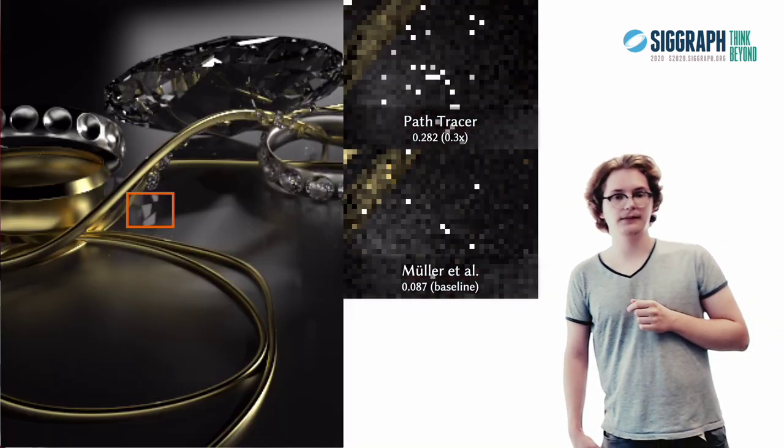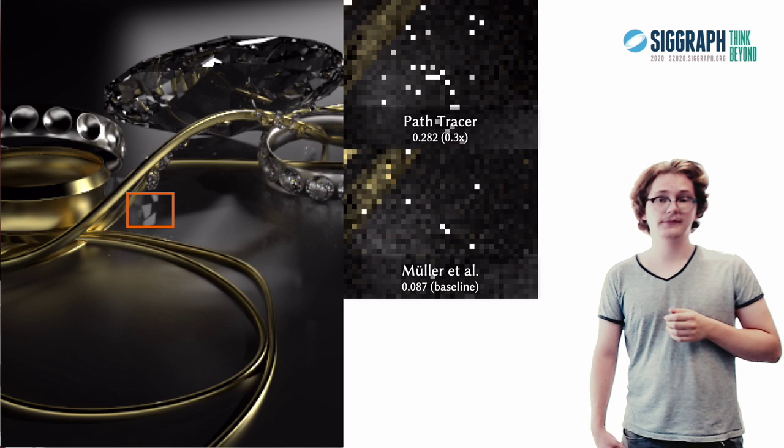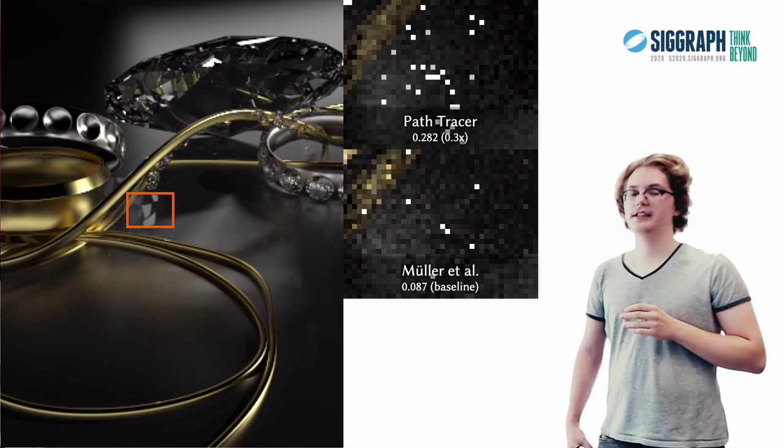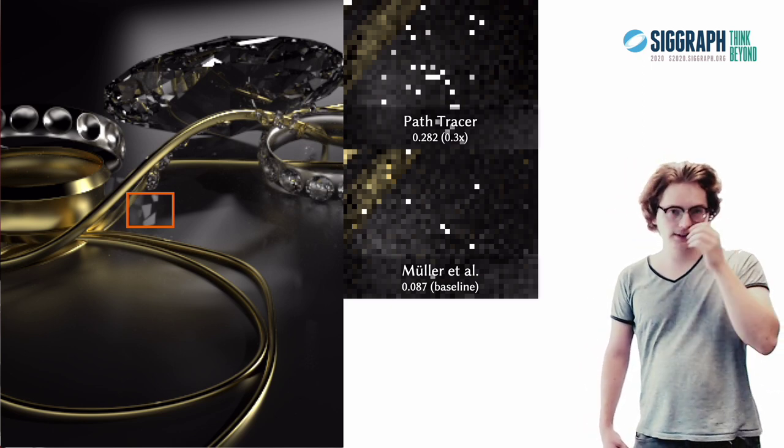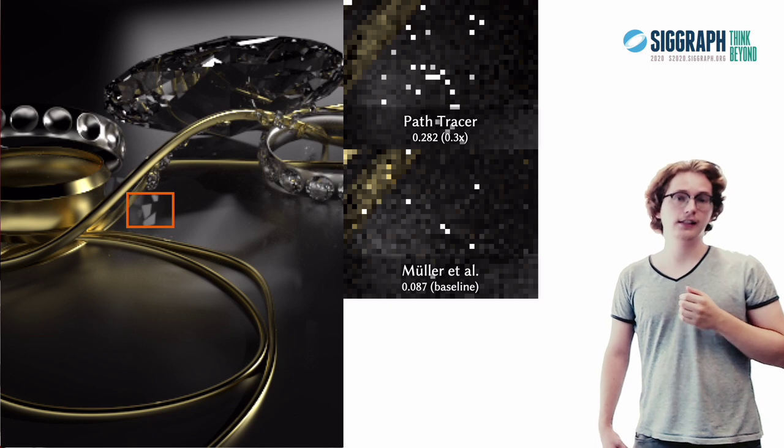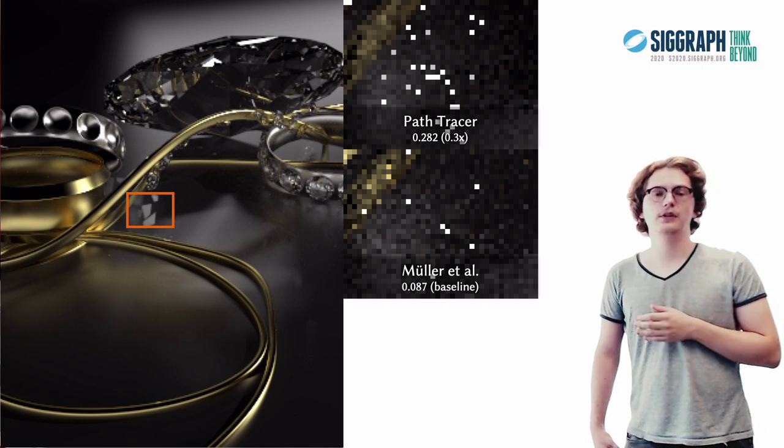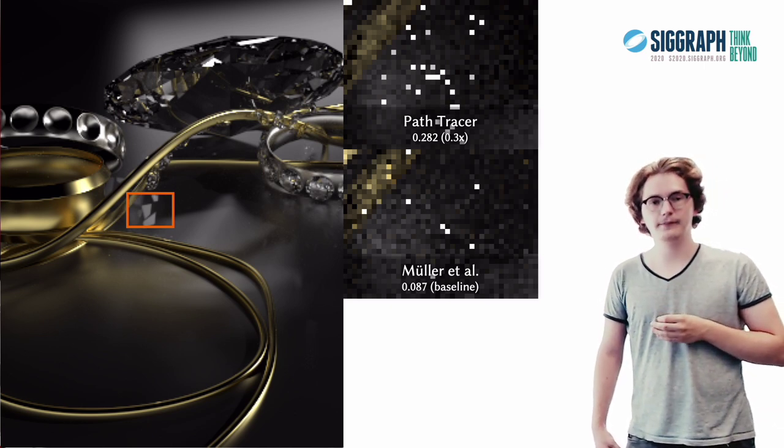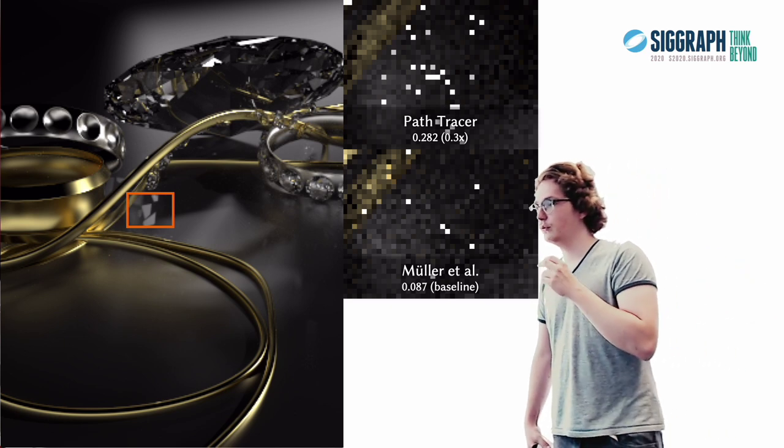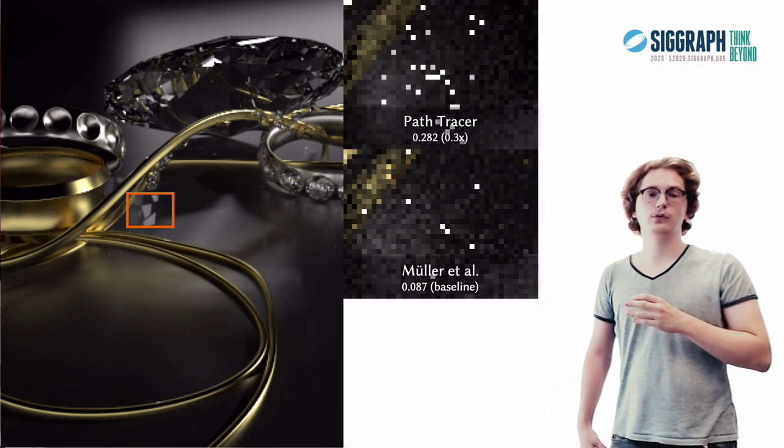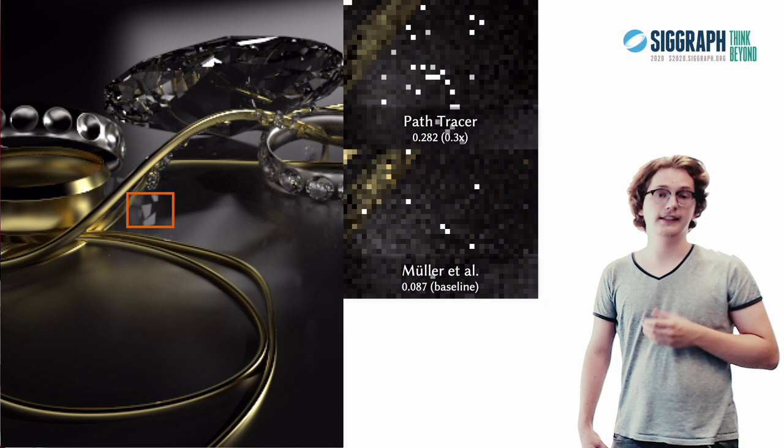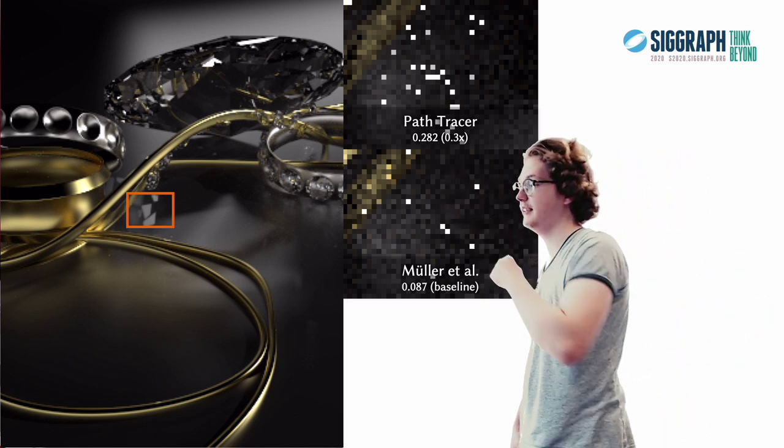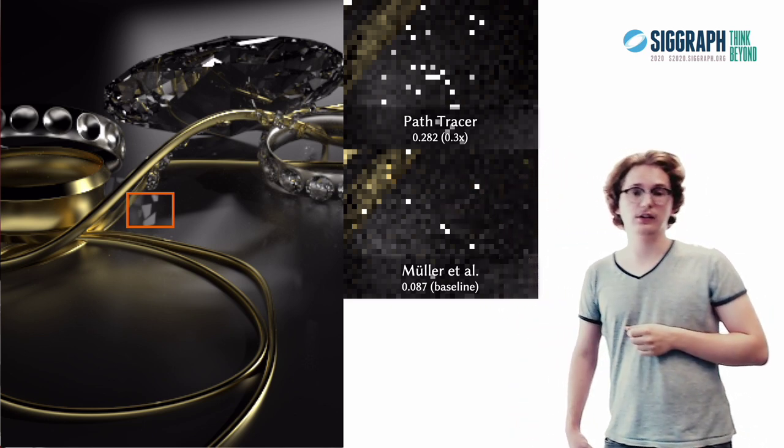Next up is the necklace scene, which we've seen earlier. This scene contains a very challenging caustic. Now, this caustic is caused by a similar situation to what we've seen when talking about the second moment guiding, where rays have to decide on whether to reflect or refract. And in this case, that happens inside of this diamond here in the back, which produces this caustic.